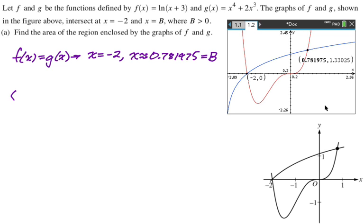So that's going to be the integral from negative 2 to b of the top function is the natural log function, so that's f(x), and then the bottom function is g(x), and then dx. And now we need to find that value, so it's calculator.